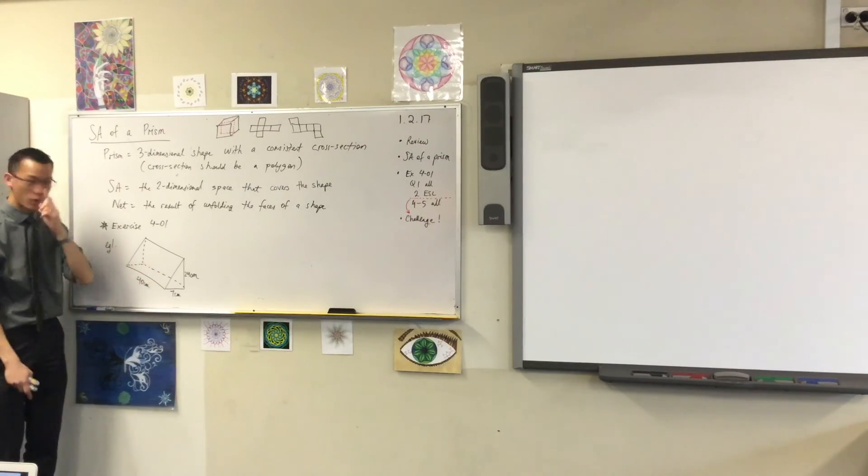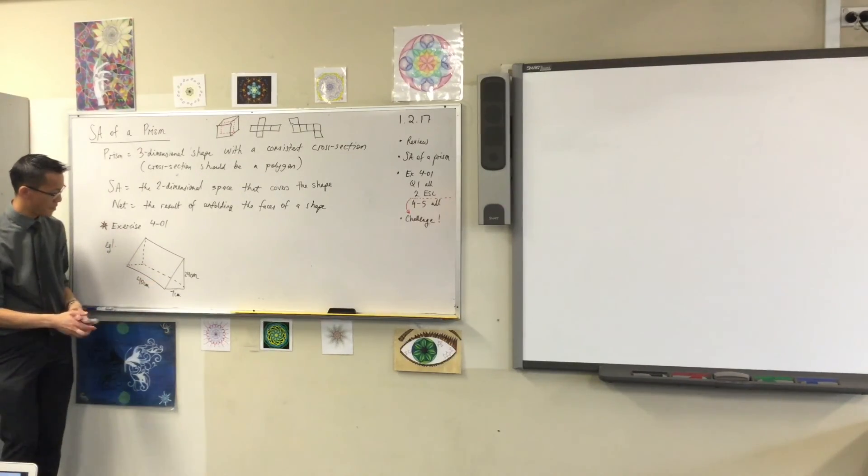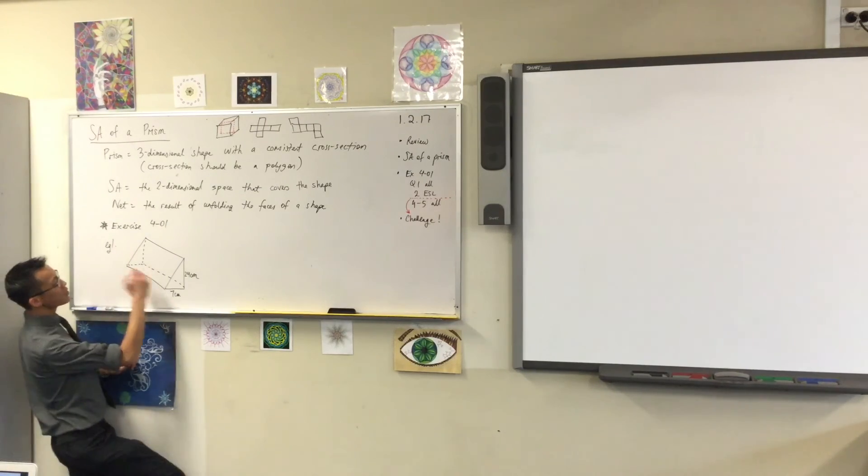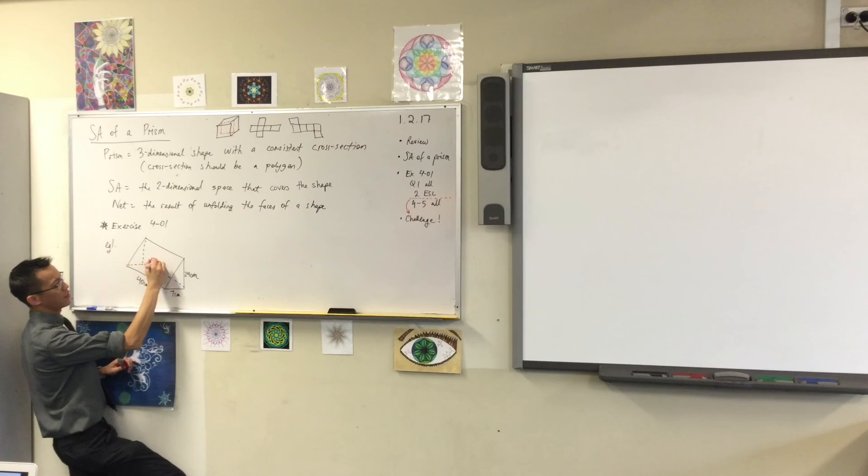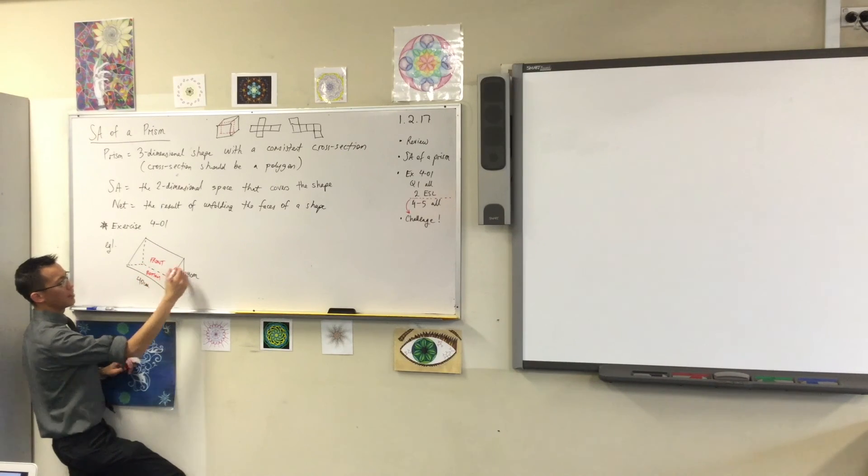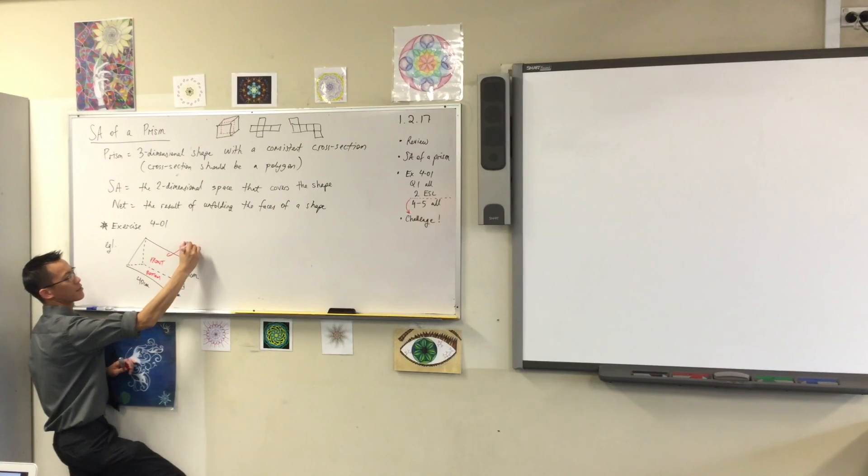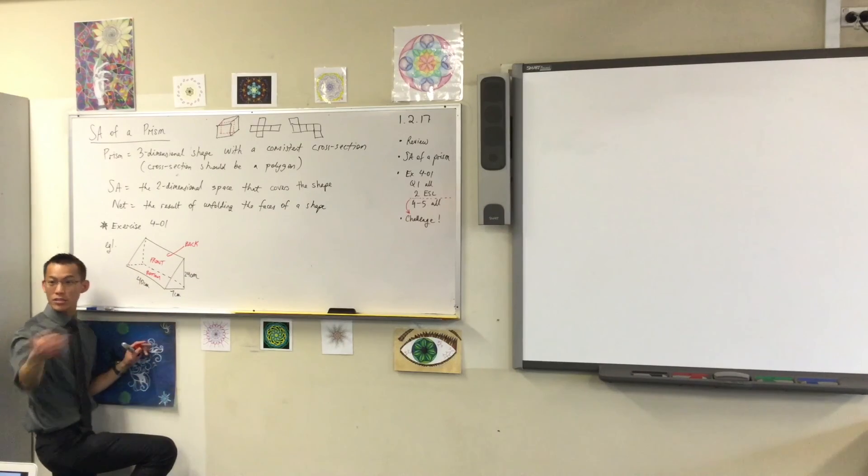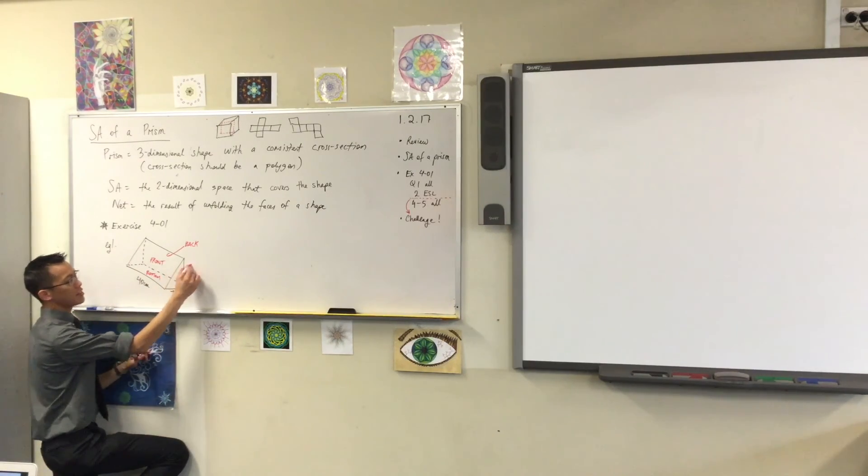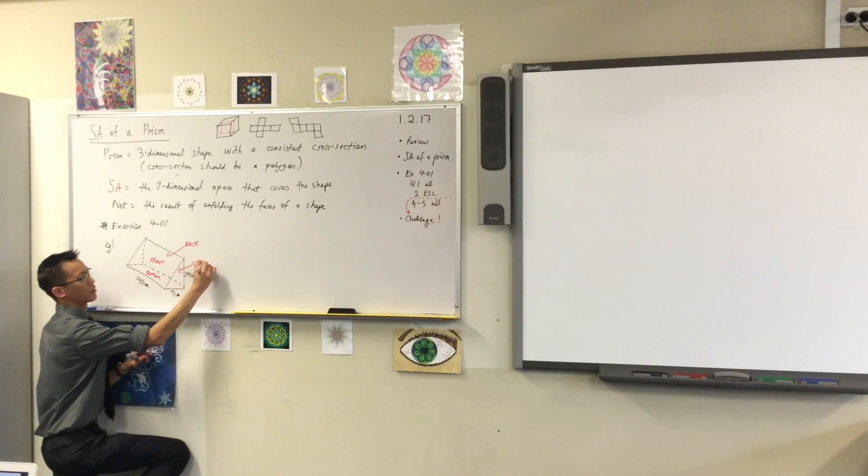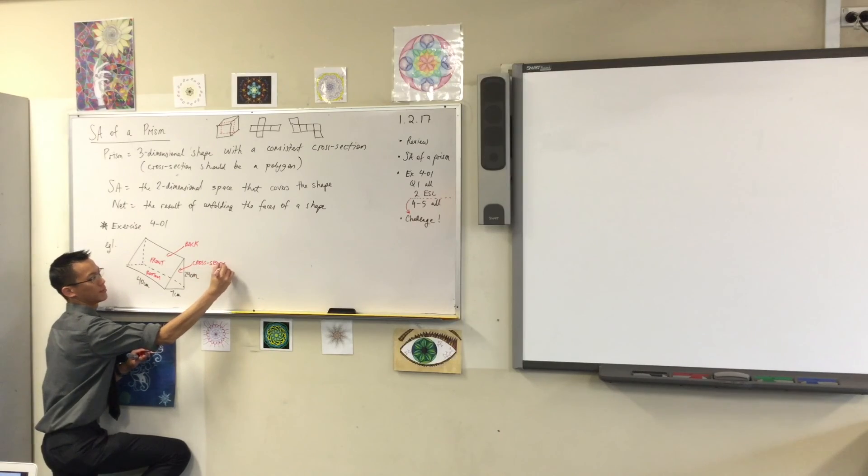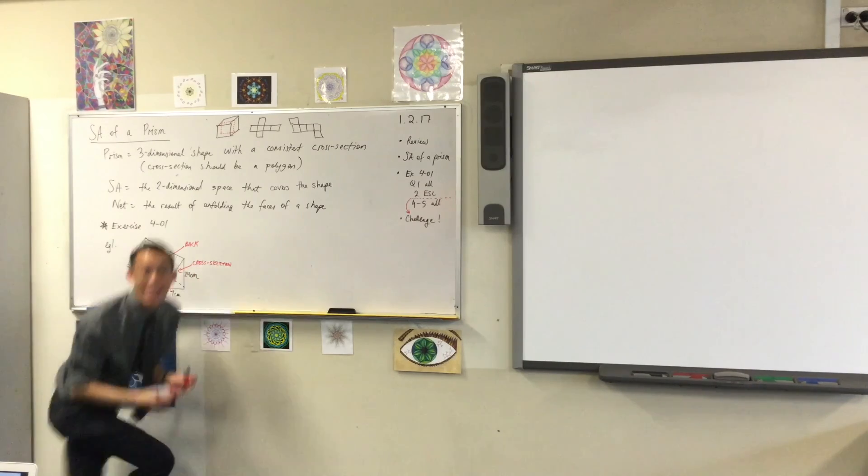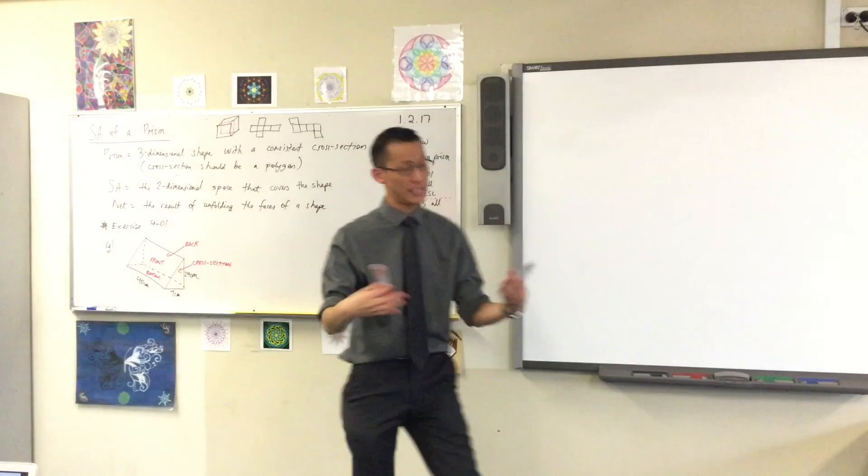We've got five faces. We want to make sure we capture each of them, right? I'm going to label them. So I'm going to call this one the front over here. You've got the bottom. You've got the back. And then, rather than call this another name, because this is so important to the shape, I'm going to call this guy the cross-section. Because after all, it is a triangular prism, right? So the triangle is the cross-section.